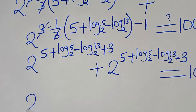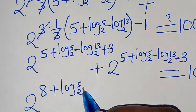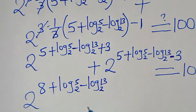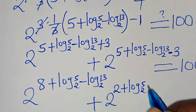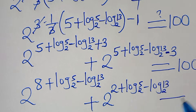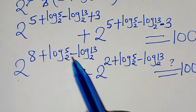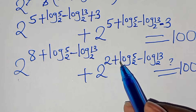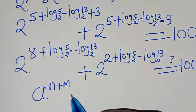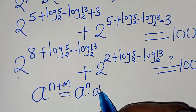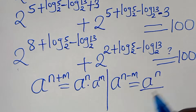This gives 2^(5+3) times 2^(log_2(5)) divided by 2^(log_2(13)), plus 2^(5−3) times 2^(log_2(5)) divided by 2^(log_2(13)). We apply the exponent rules a^(n+m) = a^n · a^m and a^(n−m) = a^n / a^m.